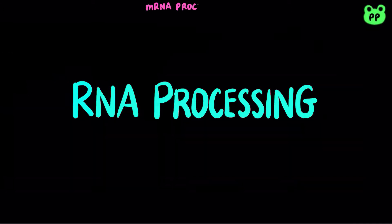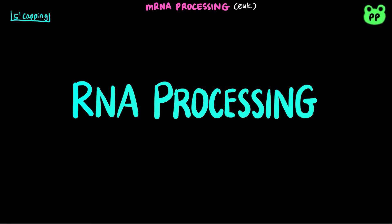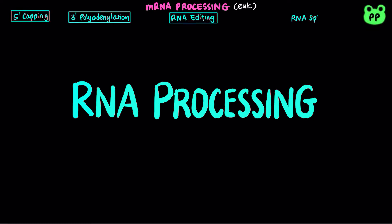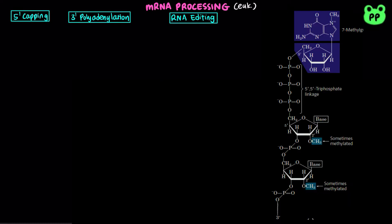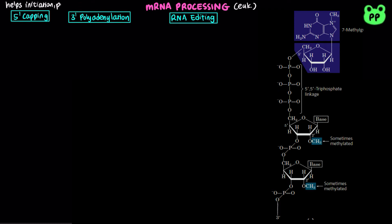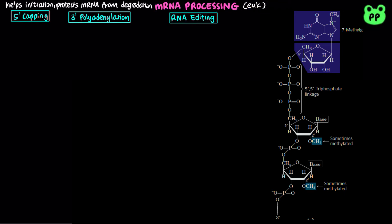There are four major types of mRNA processing: 5' capping, 3' polyadenylation, RNA splicing, and RNA editing. A 5' cap is a residue of 7-methylguanosine linked to the 5' terminal residue of the mRNA through an unusual 5' to 5' triphosphate linkage. It binds mRNA to ribosome during translational initiation, and it also helps protect mRNA from ribonucleases.